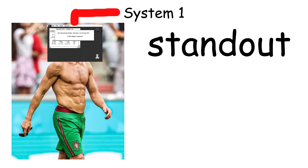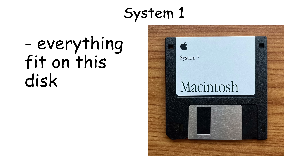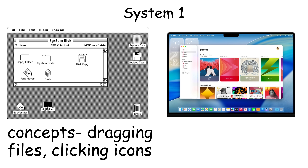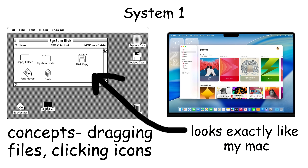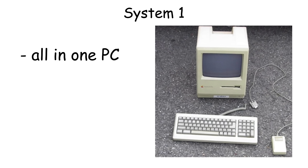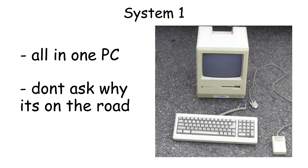What made System 1 stand out was its simplicity and ease of use. The entire operating system fit on a single 400KB floppy disk, and it introduced concepts like dragging files and clicking icons that we still use today. The Macintosh also came with a built-in screen and keyboard, making it one of the first all-in-one personal computers.